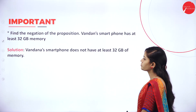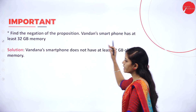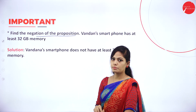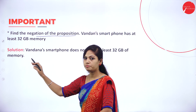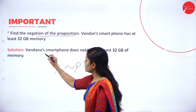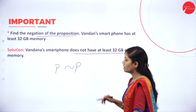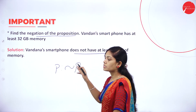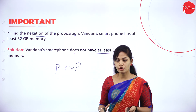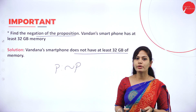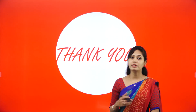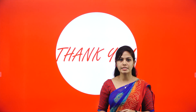The last question: find the negation of the proposition 'Vandana's smartphone has at least 32 GB memory.' Let P = 'Vandana's smartphone has at least 32 GB memory.' Then negation P = 'Vandana's smartphone does not have at least 32 GB of memory.' This is a 2-mark question. In my next session I will discuss more important problems on tautology and contradiction. Thank you.